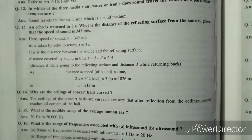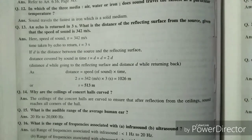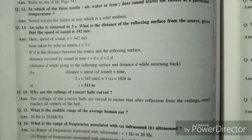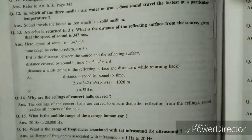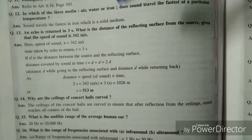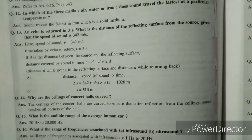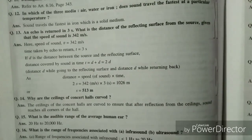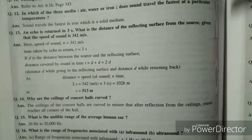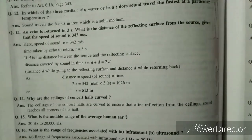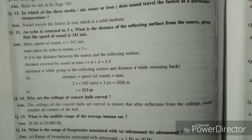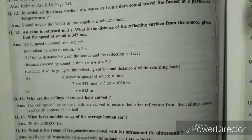An echo is returned in three seconds. What is the distance of the reflecting surface from the source given that the speed of sound is 342 meter per second. You are given the speed. You are given the time. And since distance would be twice because it's an echo, distance is equal to speed into time. So twice the distance would be equal to 513 meter.